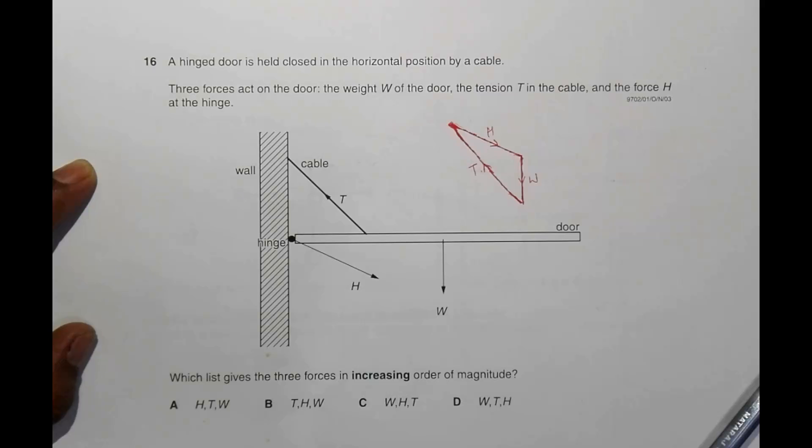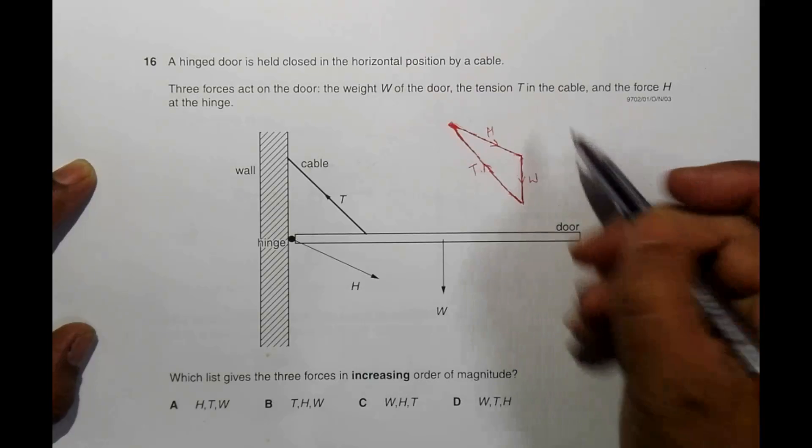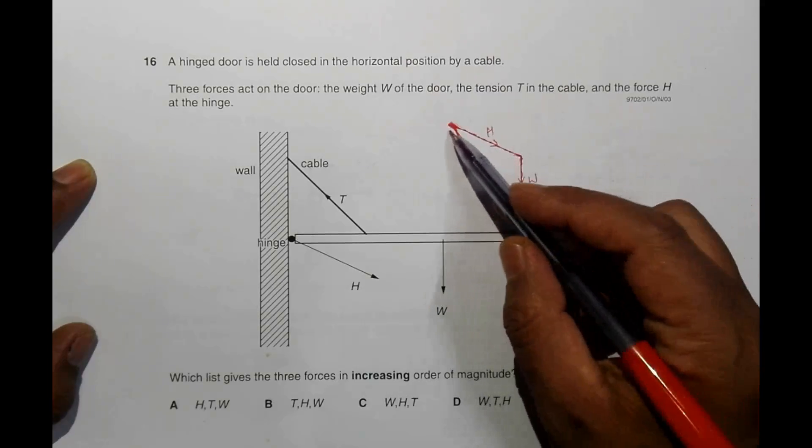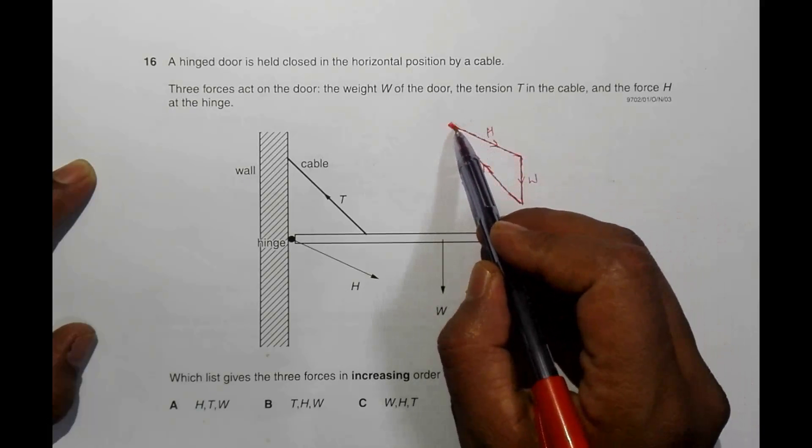It's because when three forces are in equilibrium, they will form the sides of a rectangle if we draw them one by one or if we draw them in order.